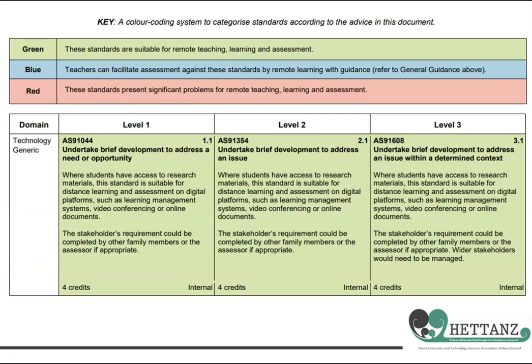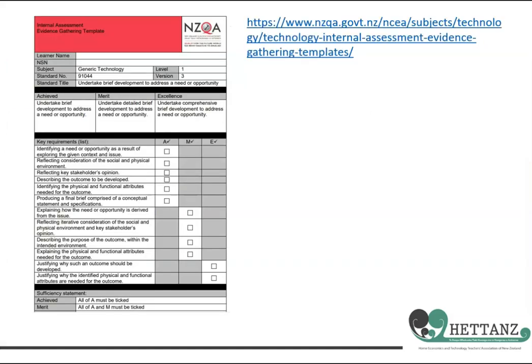NZQA has carried out a review of the Technology Achievement Standards in the Technology Matrix and colour-coded them for ease of assessment. As you can see in this image, Achievement Standard 91044 is green-coded, meaning that it is very suitable for remote teaching, learning, and assessment. NZQA has also developed a form to help gather the evidence, with the criteria for achieved, merit, and excellence very obviously shown.